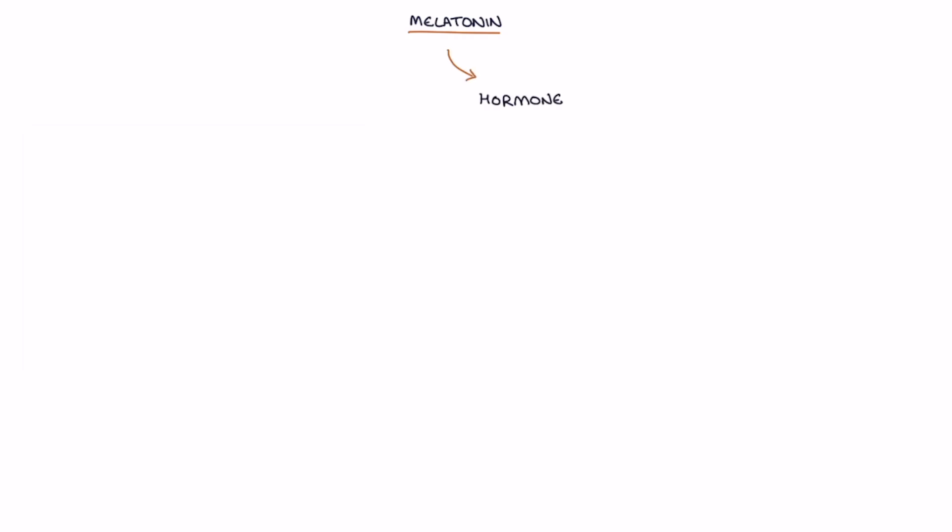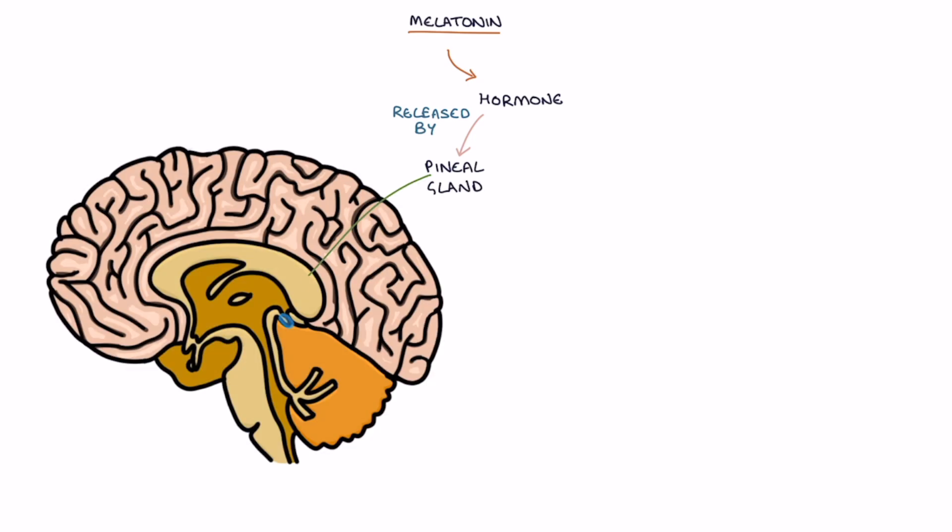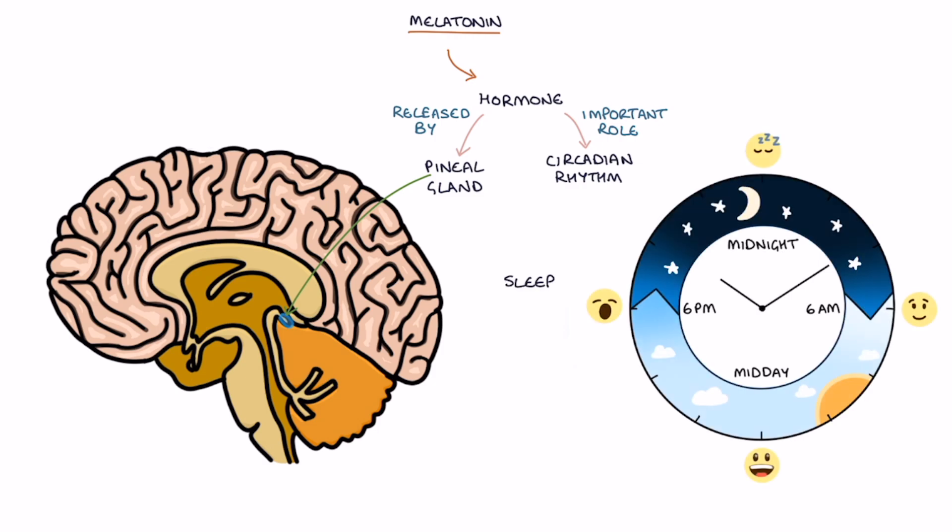Melatonin is a hormone released by the pineal gland, which is a pea-sized gland located in the center of the brain. It plays an important role in controlling the circadian rhythm and the sleep-wake cycle.